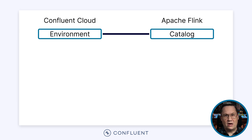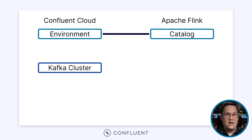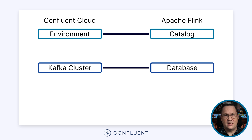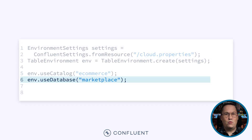Now let's drop down a level. In Confluent Cloud, an environment can contain one or more Kafka clusters. Each of those clusters is automatically mapped to a database in the Table API. Going back to the example, the Marketplace cluster lives inside of the e-commerce environment, and we would set the default database with the Use Database command. And again, there's no need to define a database, because Confluent Cloud has done that for us.